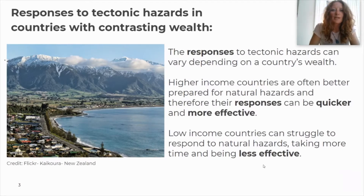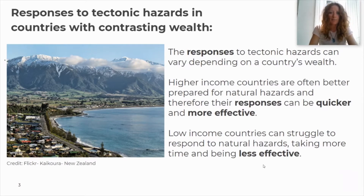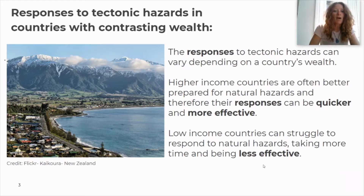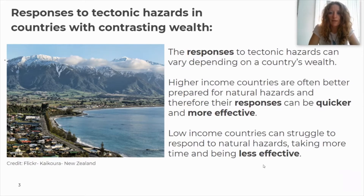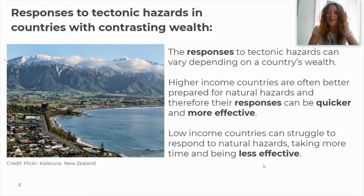Today's session is all about the responses to tectonic hazards in countries that have contrasting wealth — an expression we looked at last session. Essentially it means countries with a high income compared to countries with a low income. Just like the effects of earthquakes can differ depending on a country's level of wealth, so can the responses. In higher income countries they are often better prepared, so responses are quicker and more effective, whereas low income countries can struggle to respond and are often less effective.